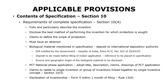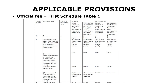Along with the complete specification, you also need to file a declaration of inventorship, wherein you provide details of who are the inventors for this particular invention. This is to be filed on Form 5 within one month of filing — either along with the complete specification or within one month of filing of the complete specification.